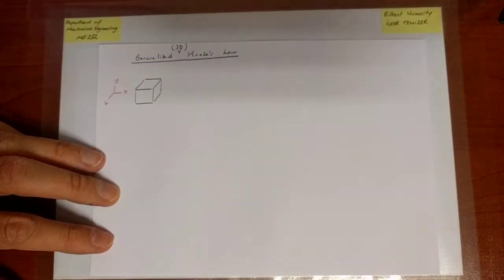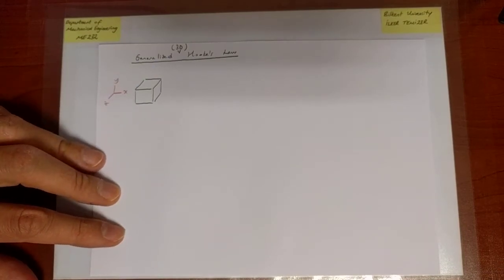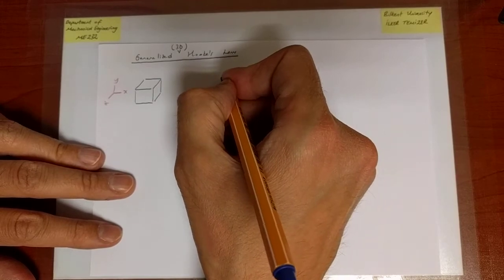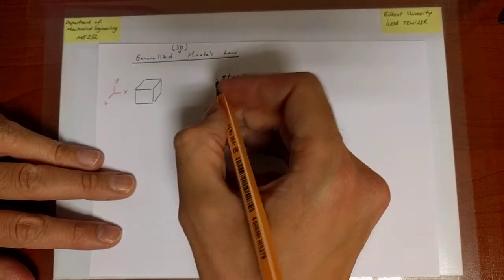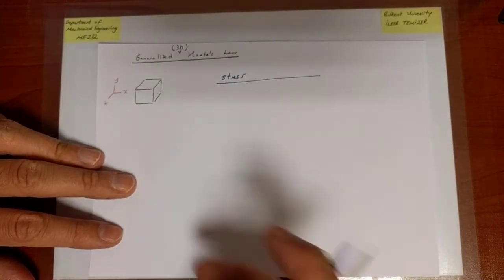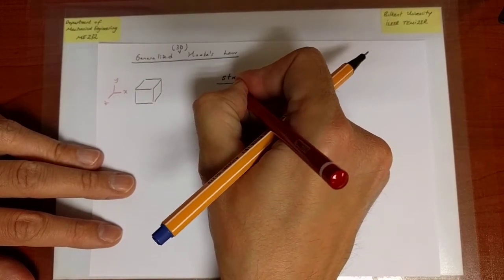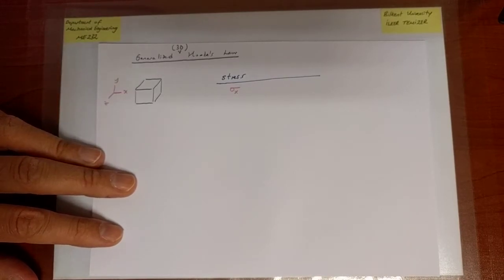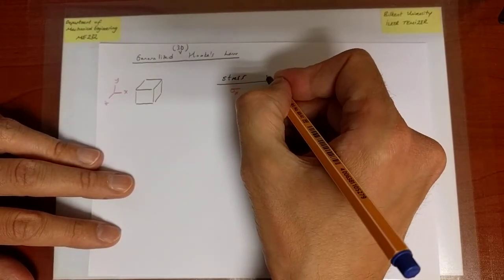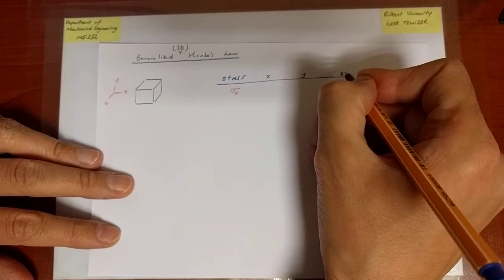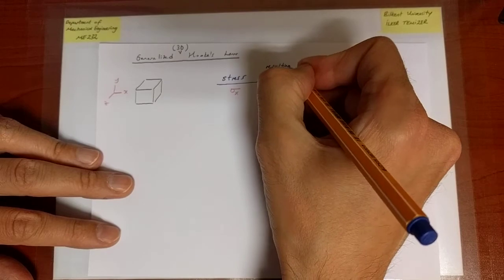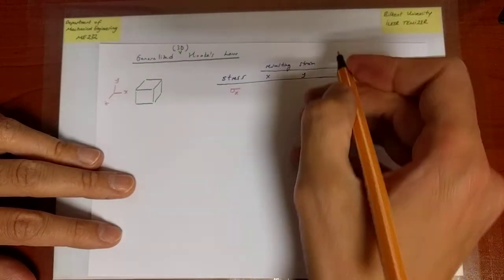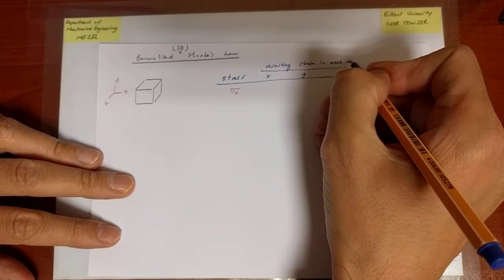And the experiment I will do is going to be as follows. I am going to impose a certain amount of force or stress in a certain direction. So that's going to be the stress I will impose. For instance, I am going to impose a stress along the X direction. And as a result of that stress, I am going to monitor the resulting strain in each direction. And those directions are X, Y, and Z in each direction.